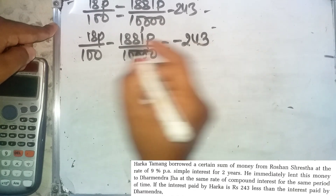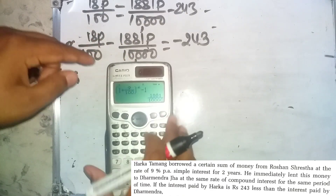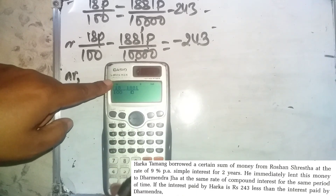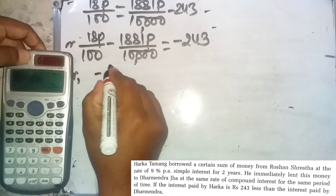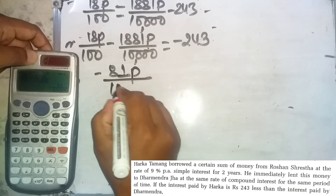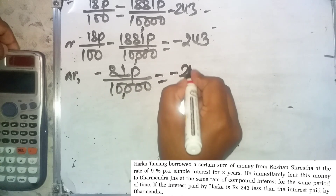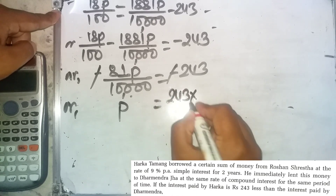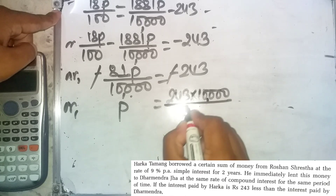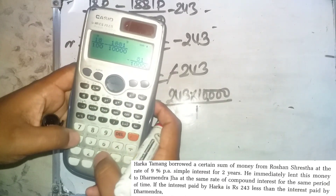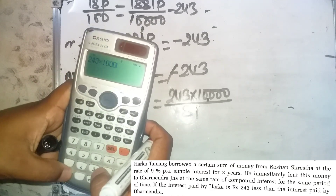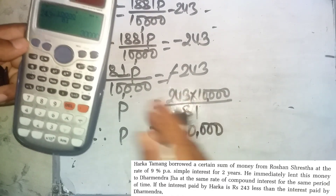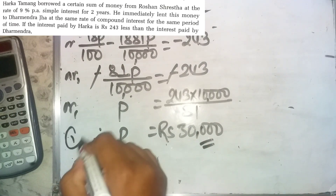Further simplifying: 18/100 minus 1881/10,000 gives 81P/10,000 equals 243. Therefore P equals 243 × 10,000 divided by 81, which gives P equals 30,000. So the principal is 30,000.